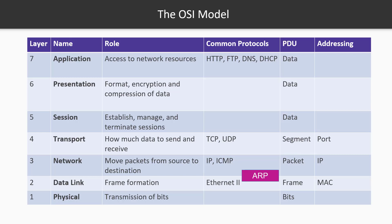On a LAN, the data link layer uses the MAC address of the destination machine to communicate and send data. The ARP protocol is responsible for resolving IP addresses to MAC addresses using ARP request and ARP reply messages. The ARP protocol resides between Layer 2 and Layer 3. There are different types of ARP messages, such as gratuitous ARP, which tests for duplicate IP addresses on a LAN when the computer boots up. There is also dynamic ARP and inverse ARP, but we'll focus on ARP request and ARP reply messages.